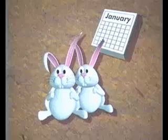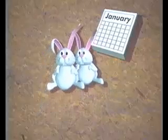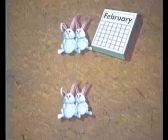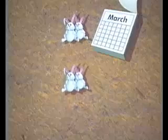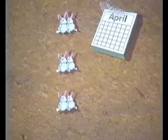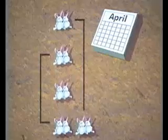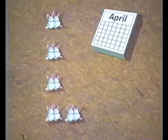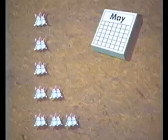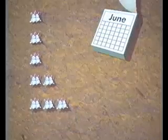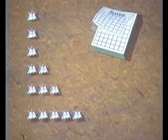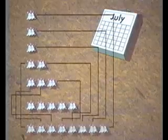Fibonacci wanted to know how many rabbits would be produced in a year, beginning with a single pair. He assumed that starting in January and continuing every month thereafter, each pair of rabbits would bear a new pair once they were a month old. As he worked towards a solution, he noticed a pattern emerging.